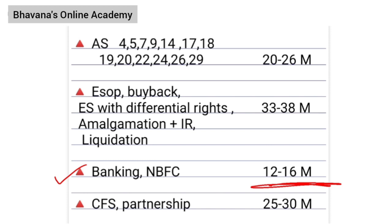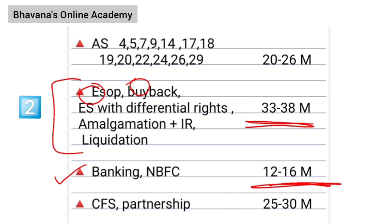Once you have read banking and NBFC, the next set of chapters to read includes ESOP, buyback, equity share with differential rights, amalgamation, internal reconstruction, and liquidation. You will get these five chapters for 33 to 38 marks in your exam. ESOP, buyback, and equity share with differential rights are quite easy. Only amalgamation and liquidation are big chapters — liquidation is full of formats, so if you read the formats well you will score good marks, and amalgamation requires a little more hard work to get a good grip.